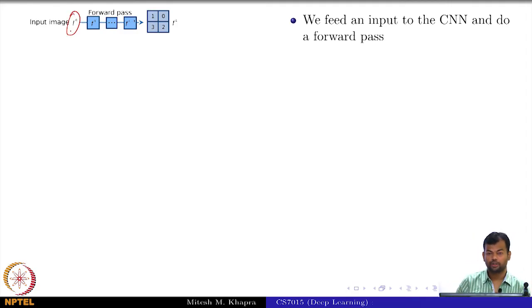Suppose you feed an input image to a convolutional neural network. That image will go through all the convolution layers, and at one convolution layer this is what your feature map looks like. I am operating at a very small scale, just considering a 2 by 2 feature map.